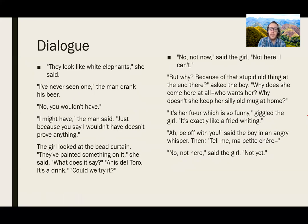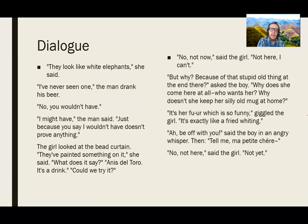Let's now compare some dialogue. From Hills Like White Elephants: 'They look like white elephants,' she said. 'I've never seen one.' The man drank his beer. 'No, you wouldn't have.' 'I might have,' the man said. 'Just because you say I wouldn't have doesn't prove anything.' The girl looked at the bead curtain. 'They've painted something on it,' she said. 'What does it say?' 'Anos del Toro.' 'It's a drink.' 'Could we try it?'